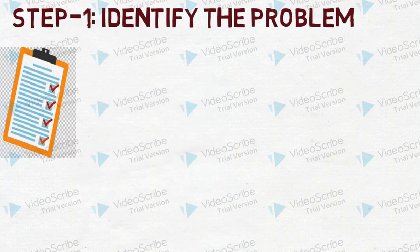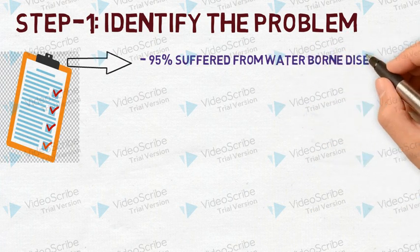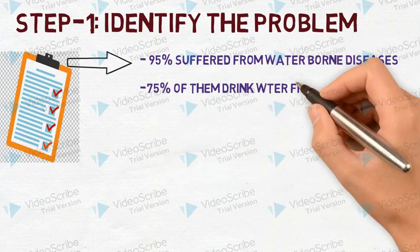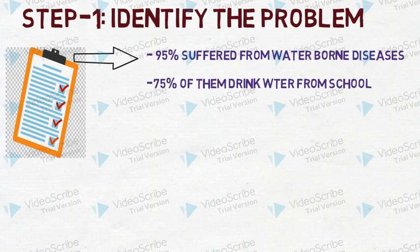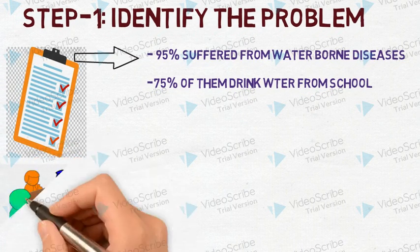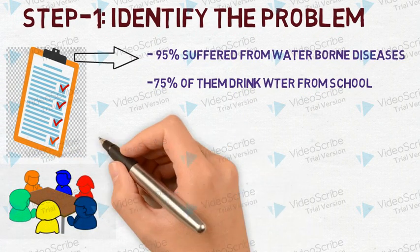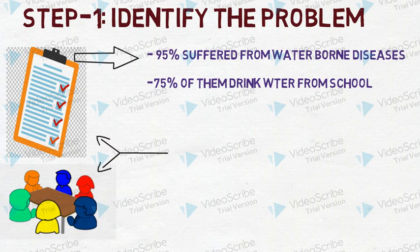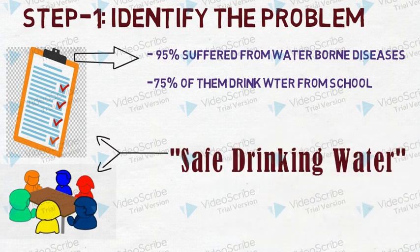For identifying the problems, we conducted a survey. After getting the results, we talked with the school authority, and collectively decided that safe drinking water would be our focus problem and that we would work on it for our capstone project.